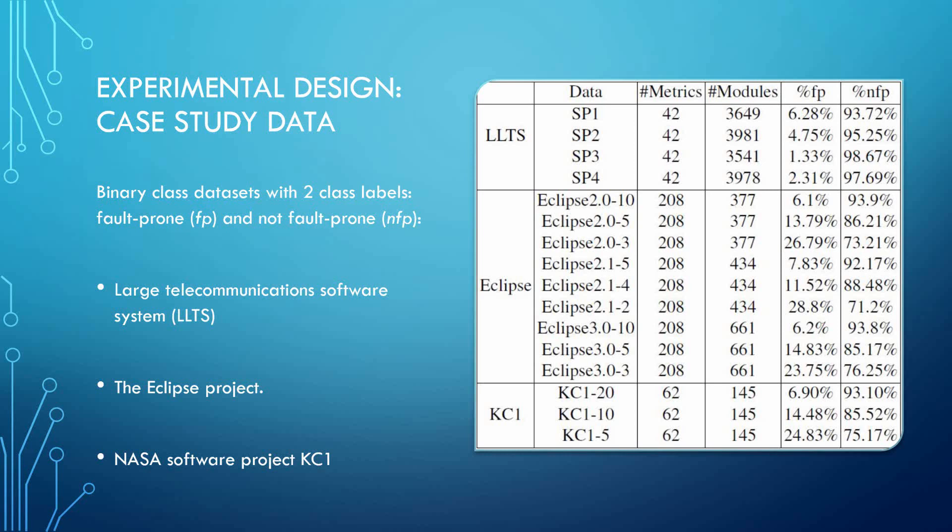The NASA project KC1 dataset originally contains 145 instances with 94 independent attributes each. Three different thresholds were used to define defective indices, and the three datasets are named KC1-20, KC1-10, and KC1-5, where the number corresponds to the threshold. Qualifying as fault-prone required more than 20 faults in the first, more than 10 in the second, and more than 5 in the third.